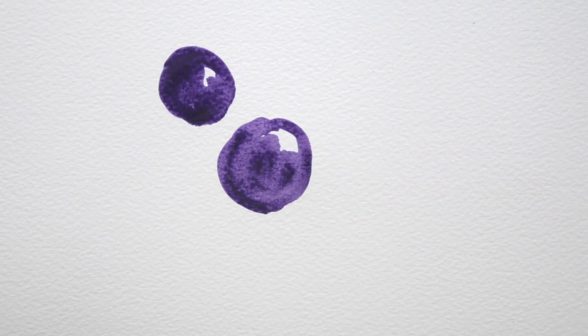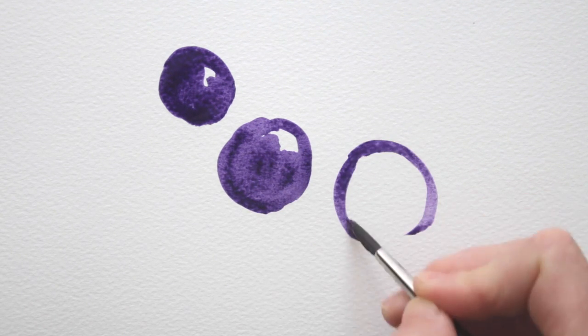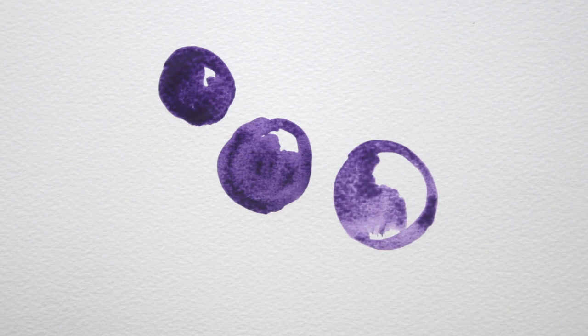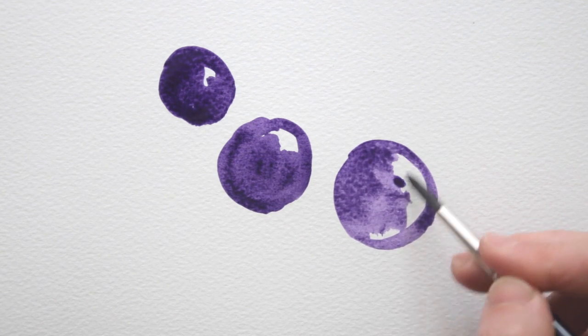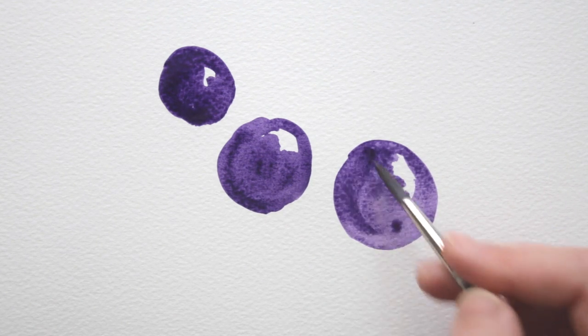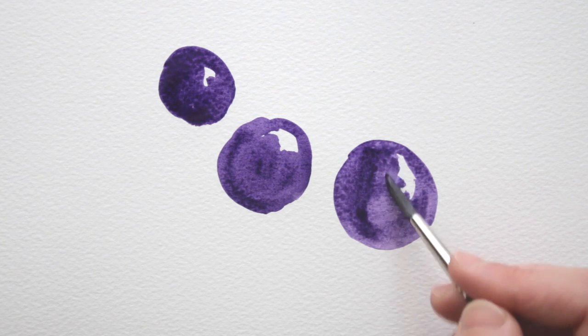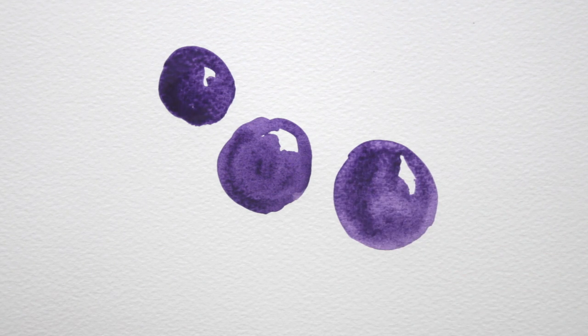I leave bits of white on the upper right side of each of them and add a little extra paint at the bottom left. This way I imply that there's a light source from the right hand side and I can create a sense of depth.